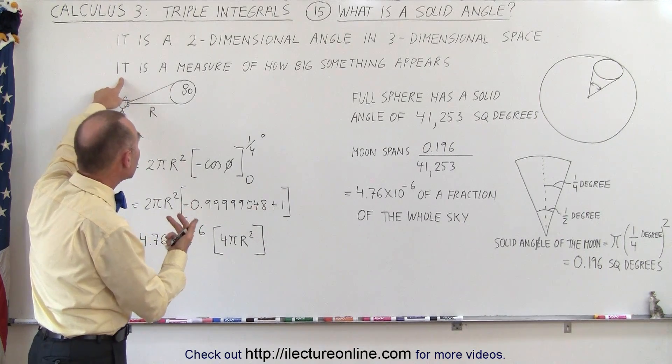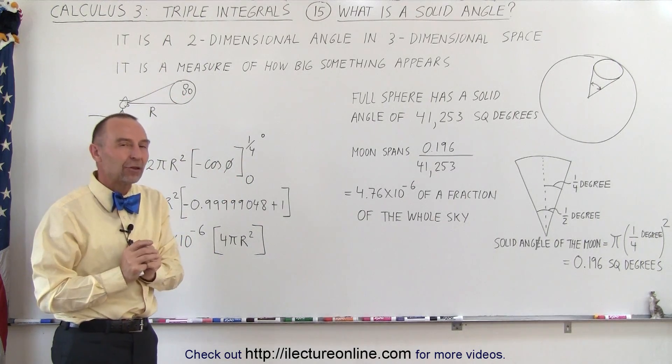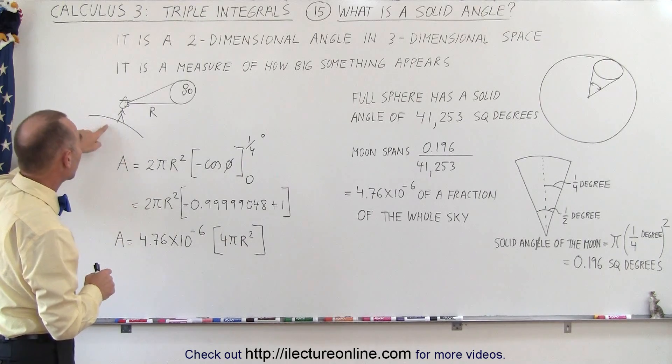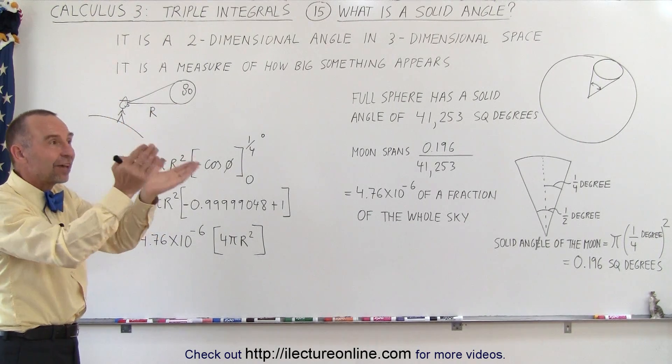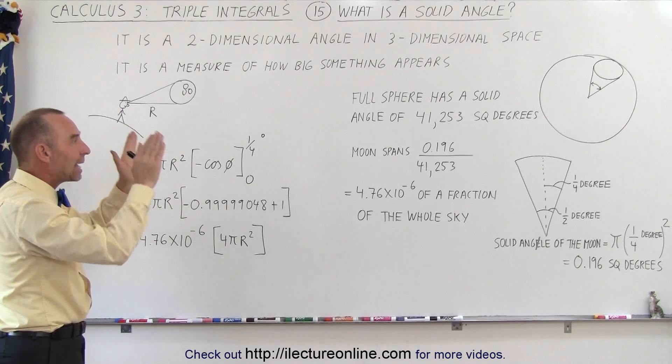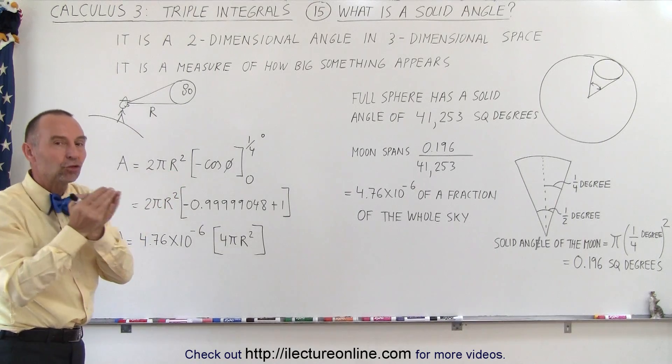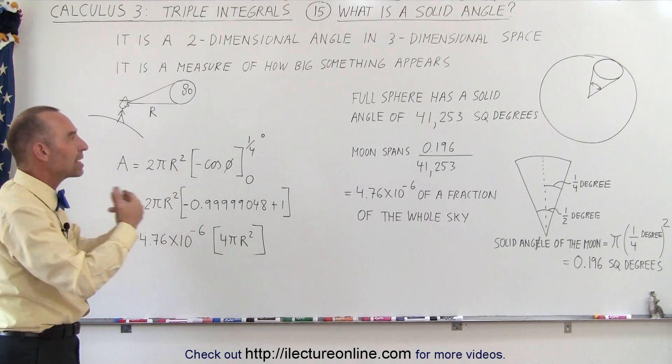We can also express it as it is a measure of how big something appears from a particular vantage point. For example, when we're observing the moon, we can say the moon is a specific size in the sky. If the distance to the moon is radius r, then the angular size in square degrees would be the measure of how big the moon appears to us.